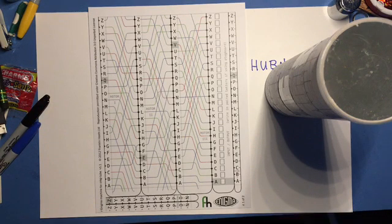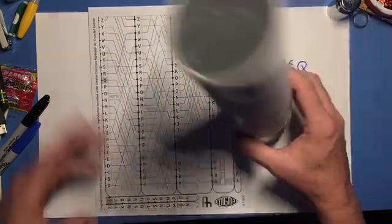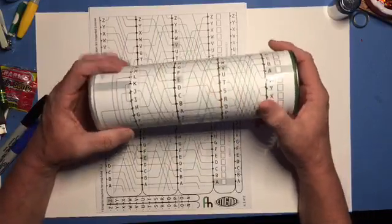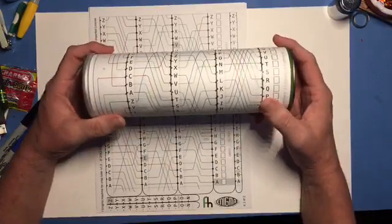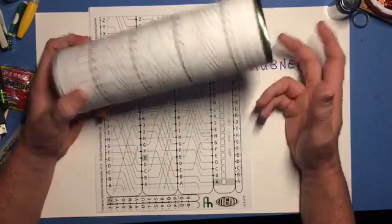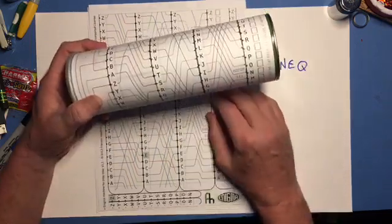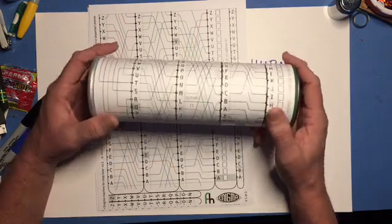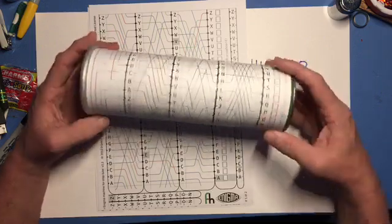Another version of a paper Enigma machine is the Pringles can paper Enigma machine. It works, it's the same principle as the actual Enigma machine, the same principle as the Michael Koss paper Enigma machine we used in class. It just looks pretty cool. I mean, look at that. Isn't that neat?